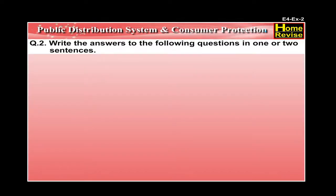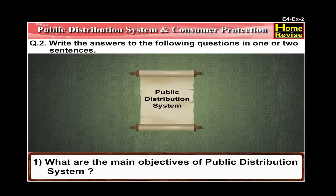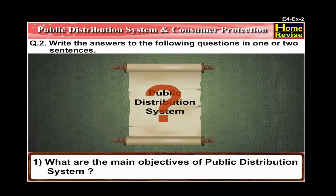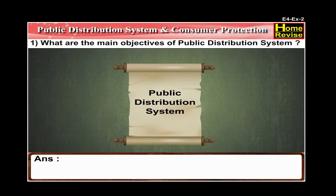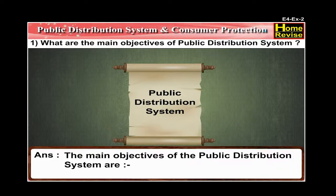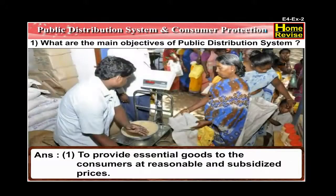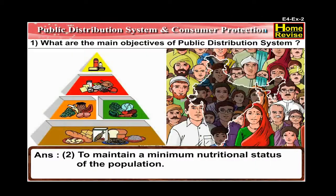Question Number 2: Write answers to the following questions in one or two sentences. Number 1: What are the main objectives of the public distribution system? The answer is: the main objectives of the public distribution system are, number one, to provide essential goods to the consumers at reasonable and subsidized prices; and number two, to maintain a minimum nutritional status of the population.